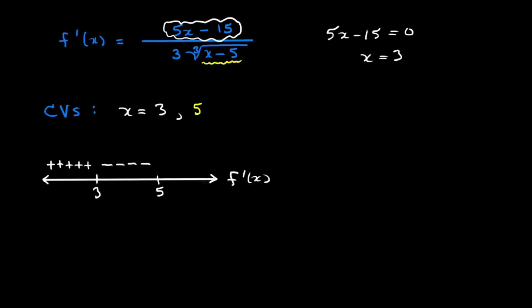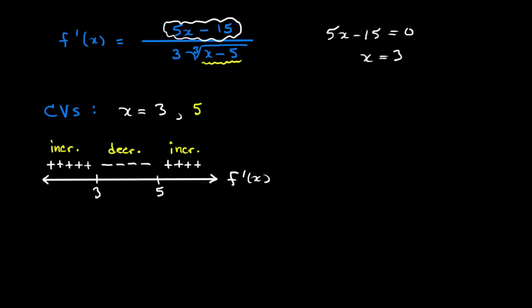For something to the right of 5, how about x equals 6? We get 30 minus 15, which is positive 15 on top, and for the first time we have three multiplied by the cube root of a positive number on the bottom. So we have positive tangent slopes again after x equals 5. Our function increases on (-∞, 3), decreases on (3, 5), and increases again on (5, ∞) — our function is zigzagging, which means both of these are turning points. So x equals 5 must be a sharp point, not a vertical tangent.